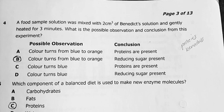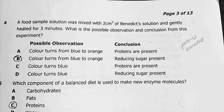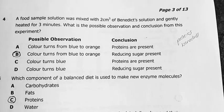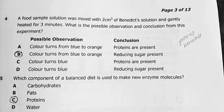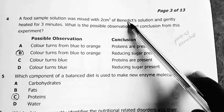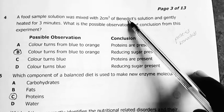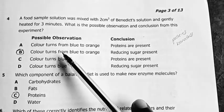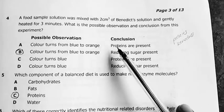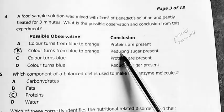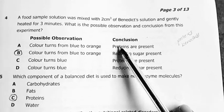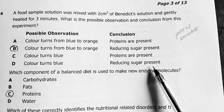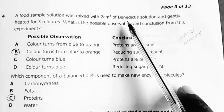Next question. A food sample solution was mixed with 2 cubic centimeters of Benedict solution and gently heated for 3 minutes. What is the possible observation and conclusion from this experiment? This is used to test for reducing sugars. So my answer is B. Color change from blue to orange. And conclusion, once it changes like this, then reducing sugars are present. Because Benedict solution is blue.